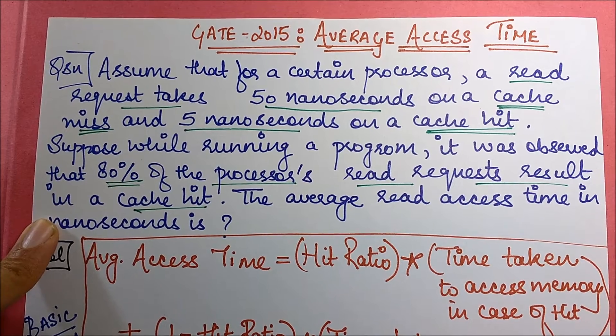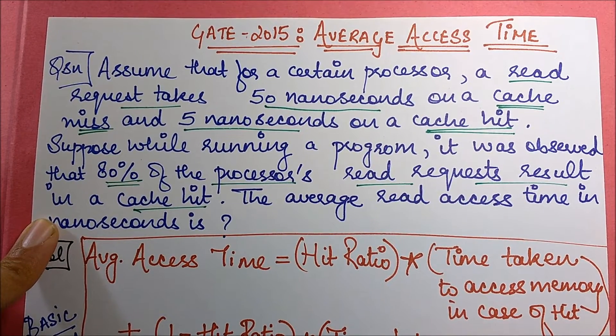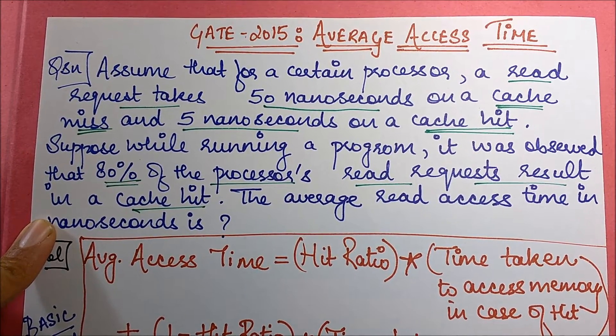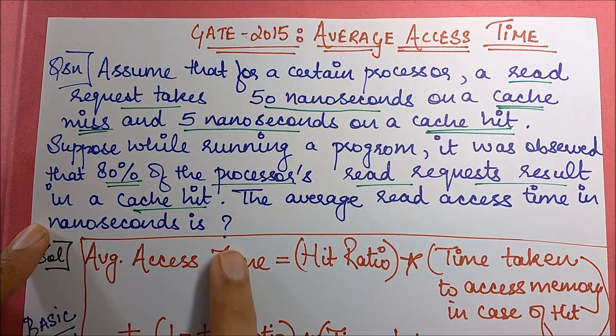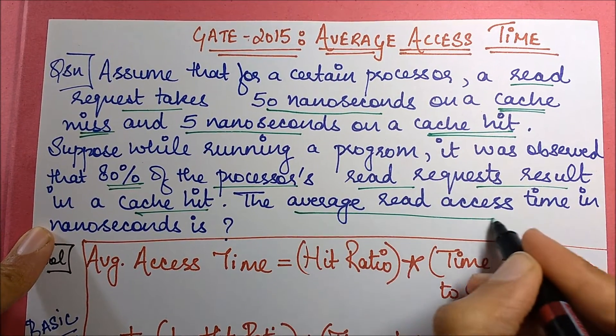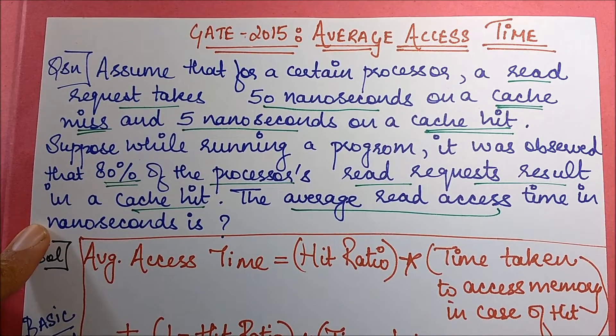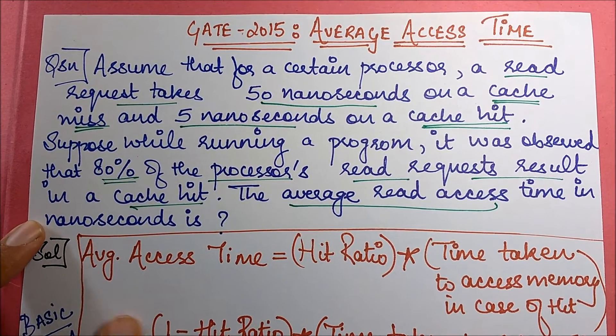So the hit ratio is 0.8, 80 upon 100 which is 0.8. The average read access time in nanoseconds is what the question is asking you to compute.